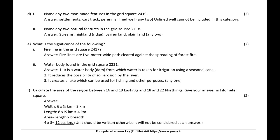What is the significance of the fire line in the grid square 2417? Answer: Fire lines are 5-meter wide paths cleared to prevent the spreading of forest fire.